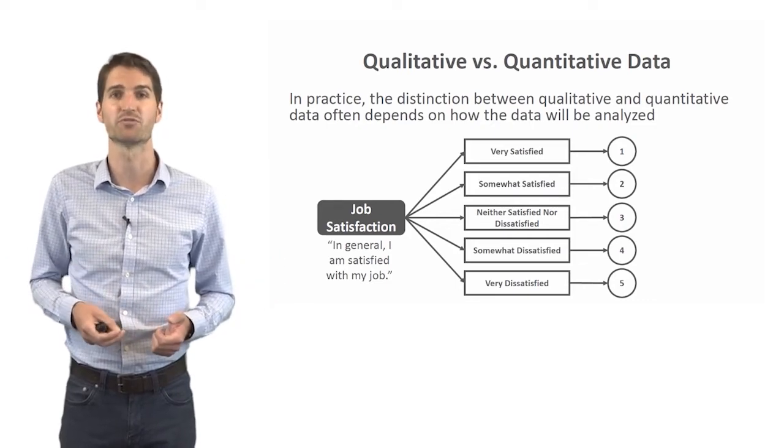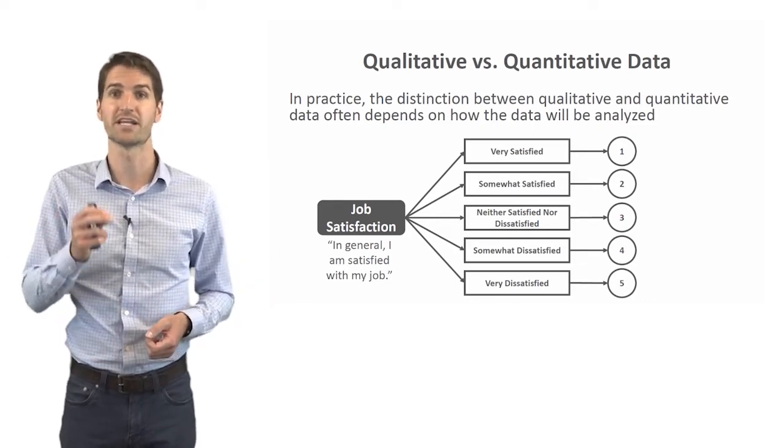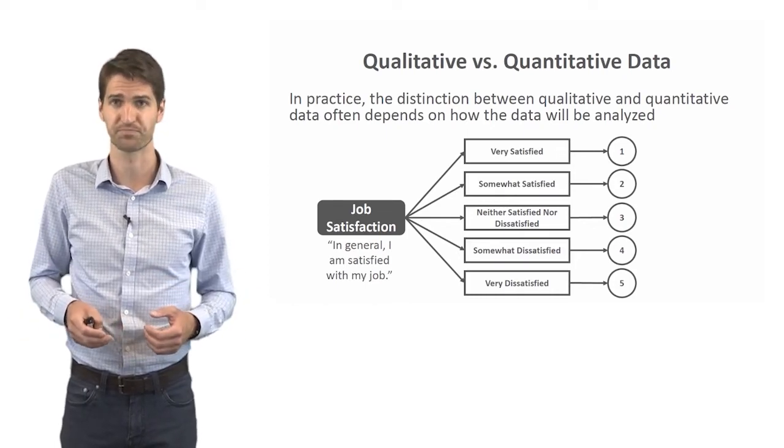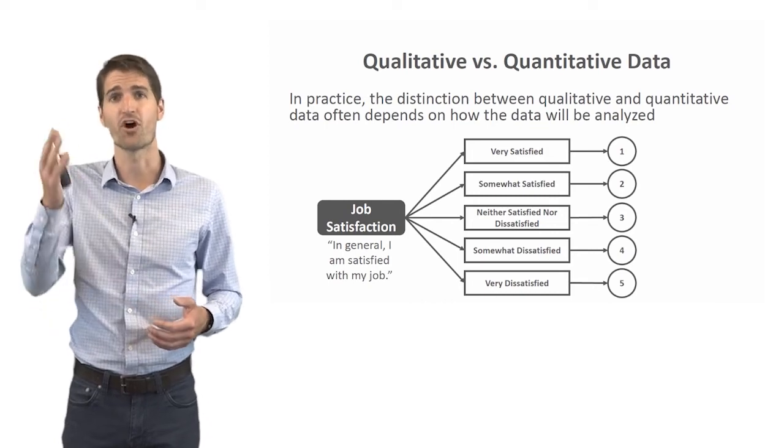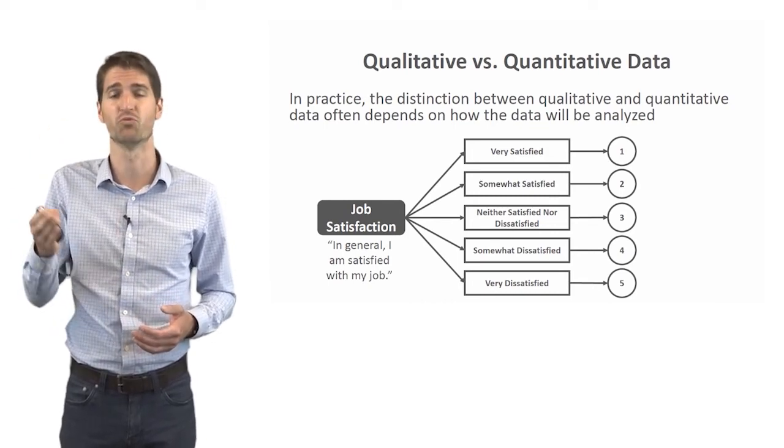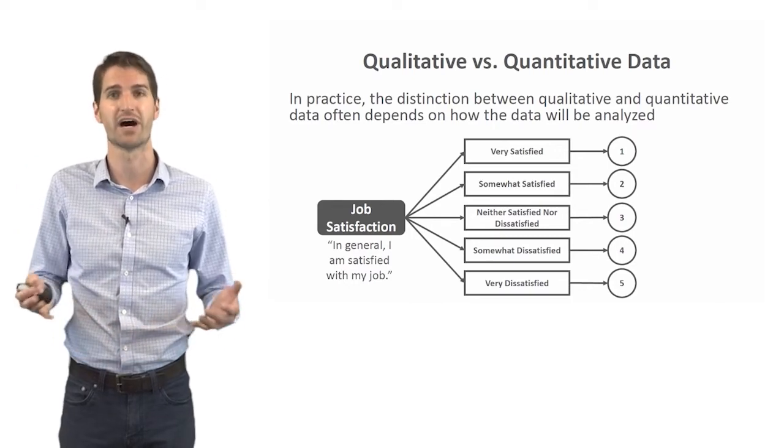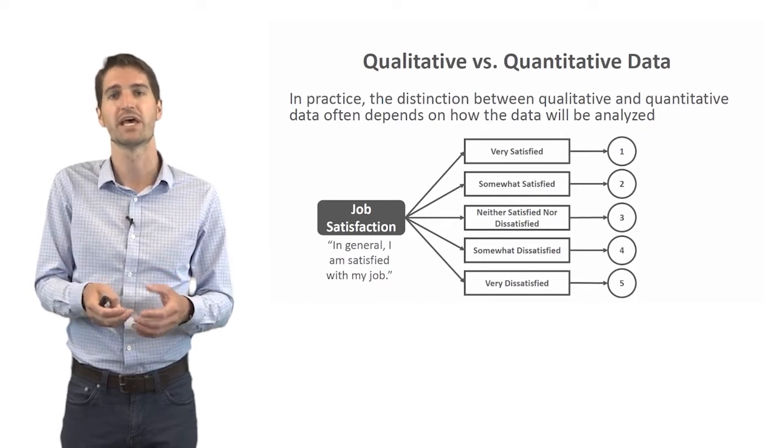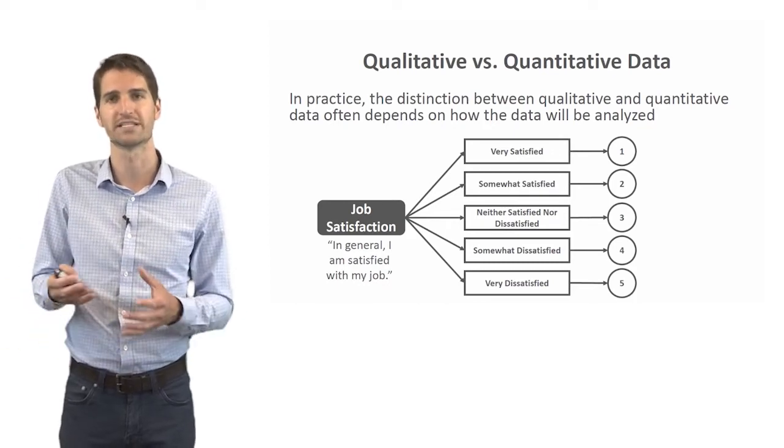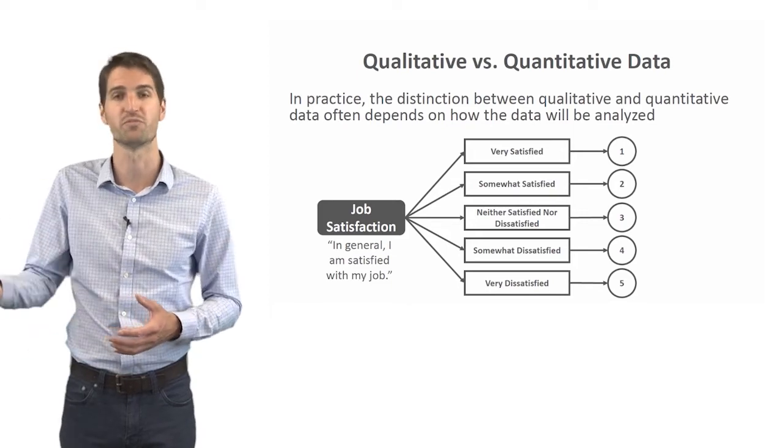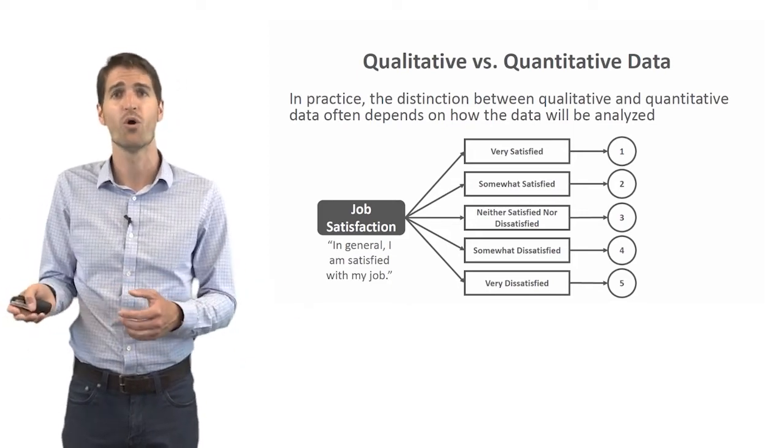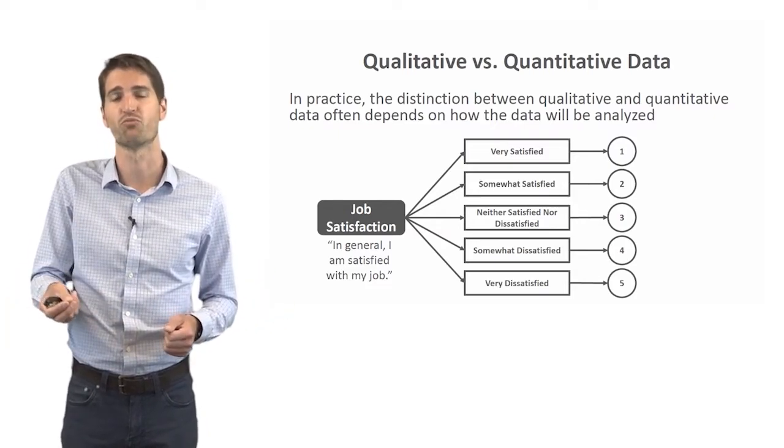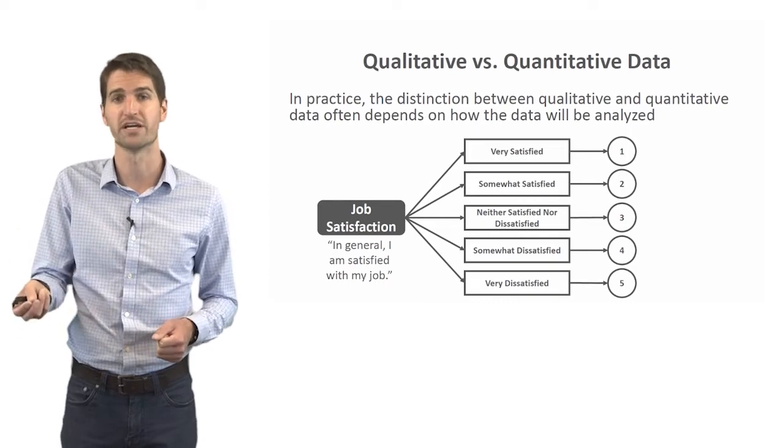It's very common. That is, in general, I am satisfied with my job. Are you very satisfied, somewhat satisfied, neither satisfied nor dissatisfied, somewhat dissatisfied, or very dissatisfied? As you can see here, we've arbitrarily coded very satisfied to be one all the way down to very dissatisfied to be five. So we've taken these qualitative narrative descriptions of how satisfied someone is and translated them into quantitative scores for this person or for a group of people. So again, the distinction is not always clear or sometimes the distinction can shift very quickly depending on our choices in terms of what to actually quantify and what not to quantify.